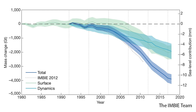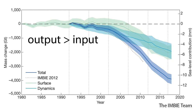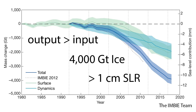By the end of the records shown on this plot, the ice sheet began to lose substantial mass from the two processes. About 4,000 gigatons of ice, or more than 1 cm, of sea level rise in about a decade.